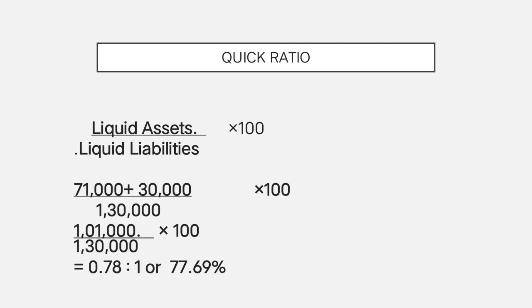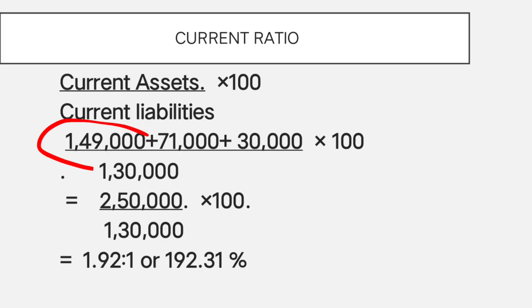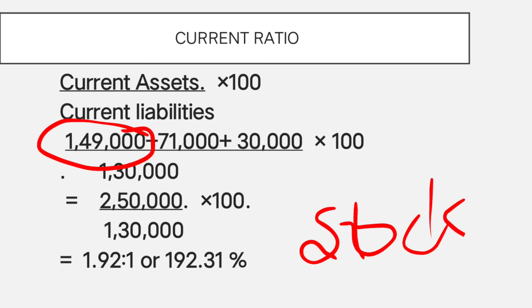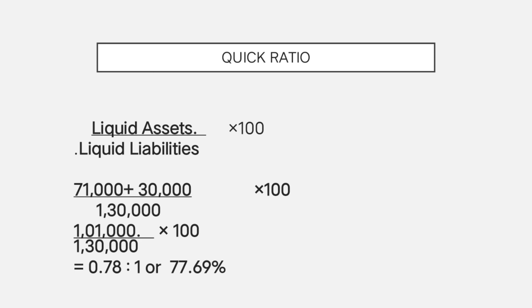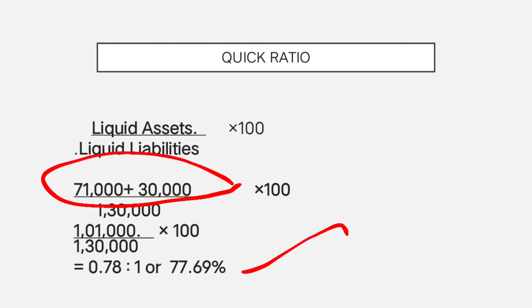Quick ratio (liquid ratio or acid test ratio) is liquid assets divided by liquid liabilities into 100. Liquid assets exclude stock, so debtors 71,000 plus cash 30,000 equals 1,01,000. Divided by current liabilities 1,30,000 gives 0.78 to 1, or 77.69%.